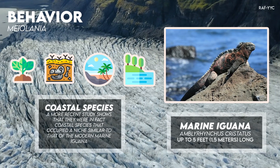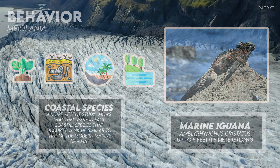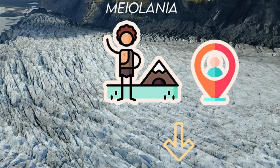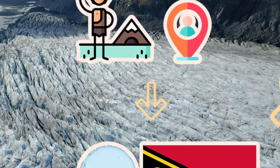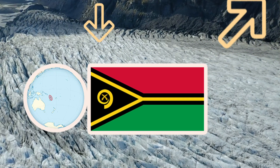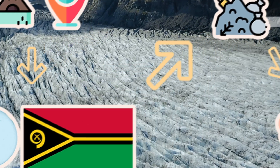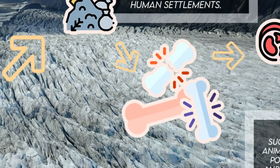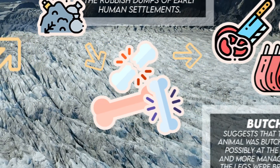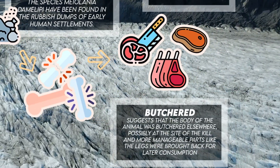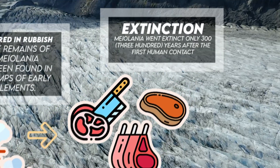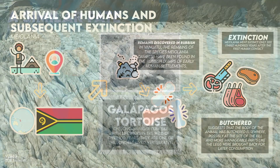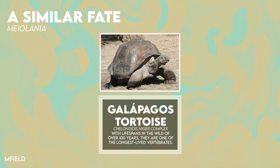The disappearance of much of the Pleistocene megafauna is often attributed to the arrival of humans, and in the case of Myolania, there is actually strong evidence to support this view. In Vanuatu, the remains of the species Myolania damolipi have been found in the rubbish dumps of early human settlements. Most of these remains are of leg bones, which strongly suggest that the body of the animal was butchered elsewhere — possibly at the side of the kill — and more manageable parts like the legs were brought back for later consumption. Study of these deposits points to Myolania going extinct only 300 years after the first human contact. This fate was nearly shared by the Galapagos tortoise, Chelonoidis nigra, following the arrival of the first Europeans on the Galapagos Islands.